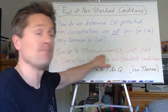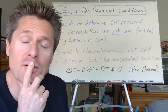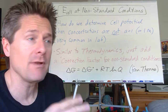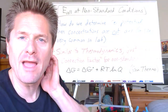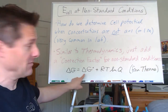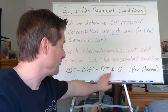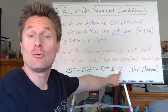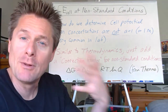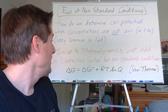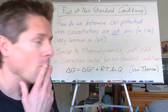We ran into this exact same problem in thermodynamics. We were doing Gibbs energy changes at standard conditions over and over — especially from those thermo tables. What if we're not at standard conditions? What if we don't have gases at pressures of one bar or one atmosphere? Solids and liquids of course have activities of one. What we did was take the Gibbs energy at standard conditions and just added a correction factor: the gas constant, the temperature in Kelvin, and the natural log of the reaction quotient Q.